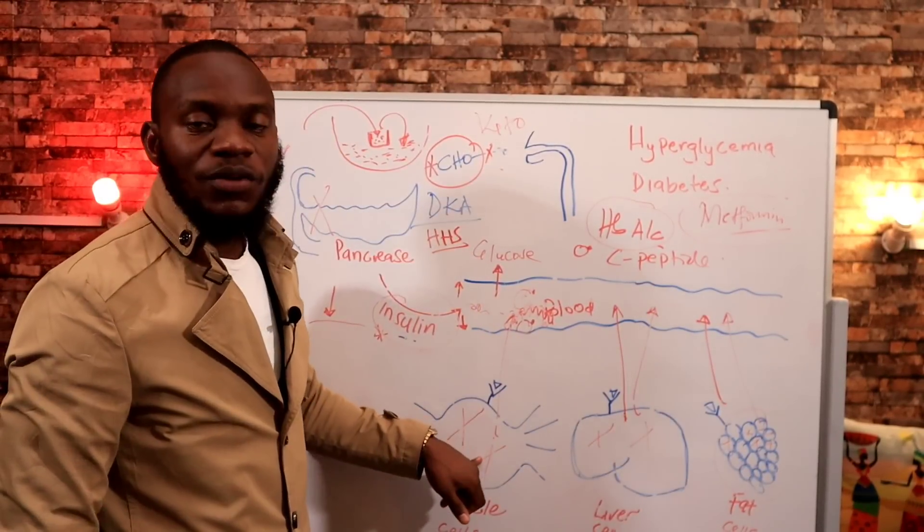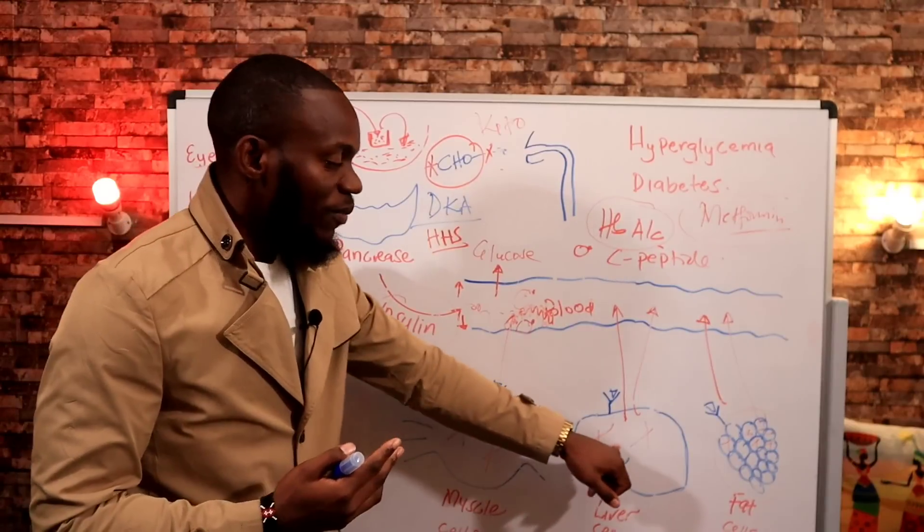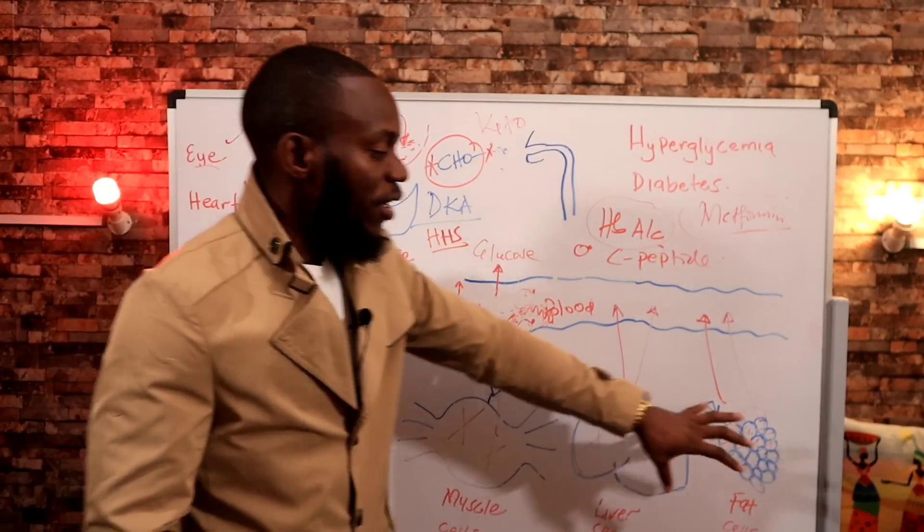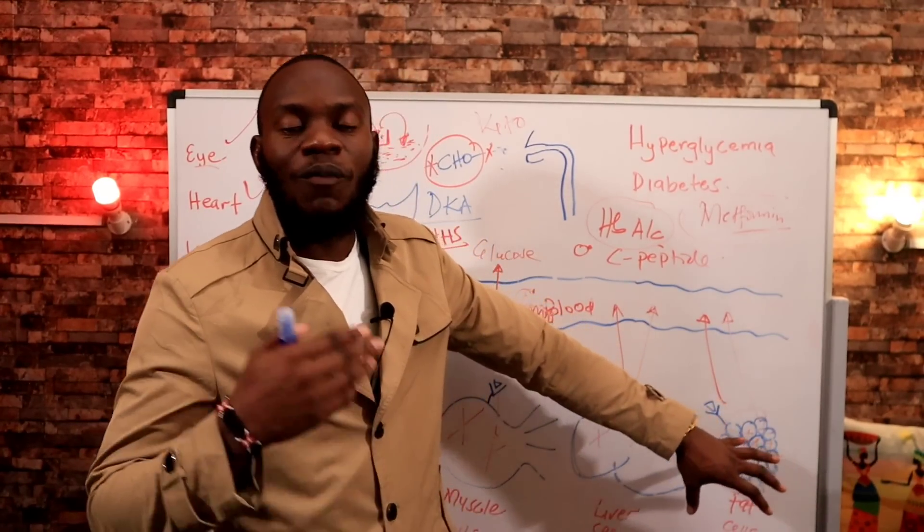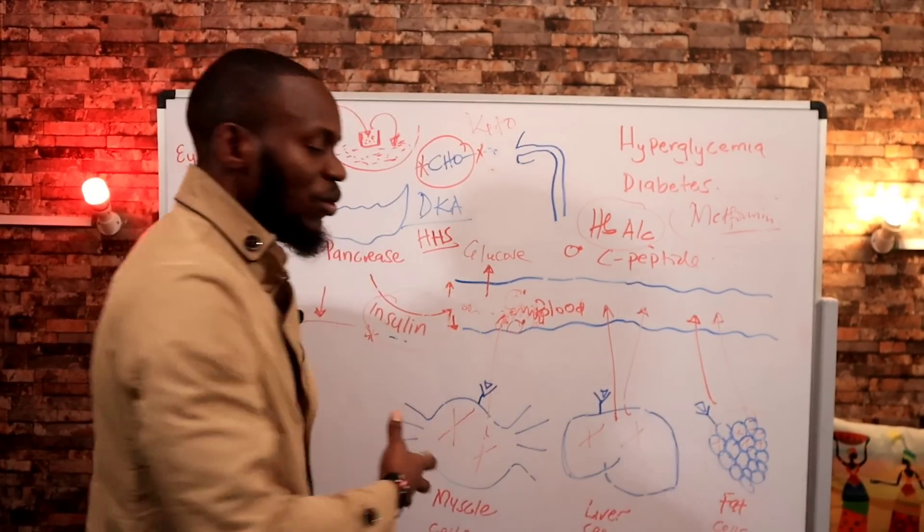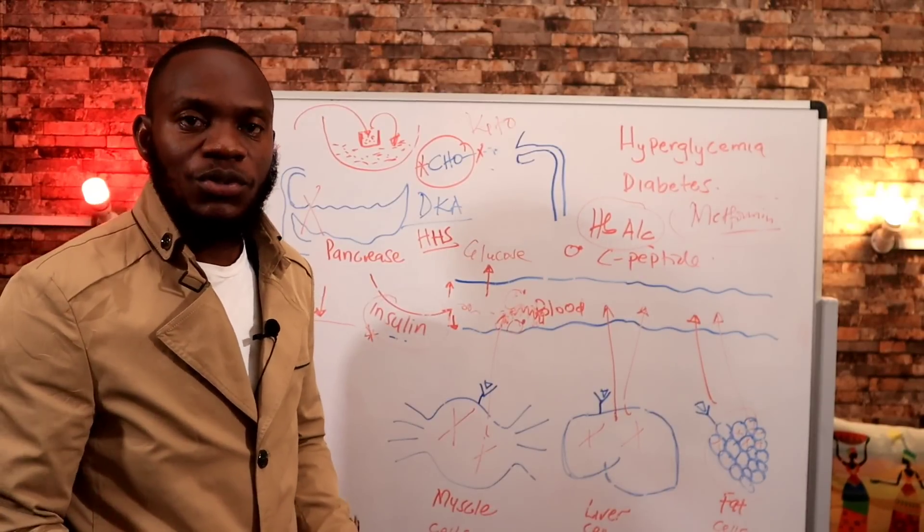So if I'm not working out, then my skeletal muscles don't need glucose. If my liver is full of glycogen, then I don't have any storage of glucose. If my fat cells are full, so I'm already obese, I'm already diabetic for that matter. If I'm diabetic already means these cells are filled with glucose. So where am I taking that glucose to?